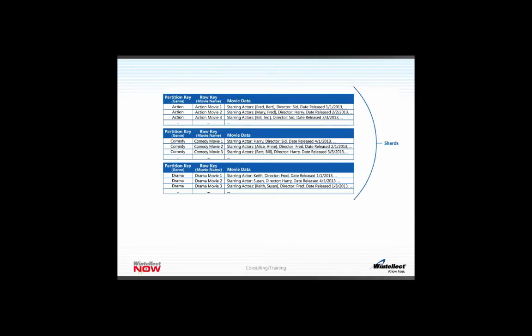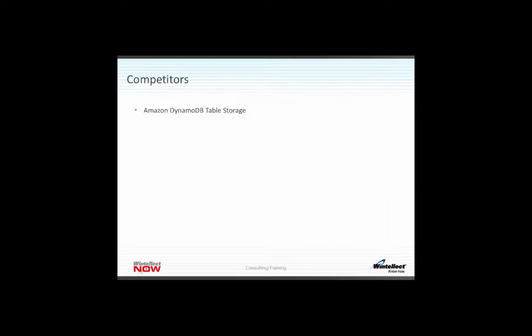You can shard Table Storage — storing all action movies in one place, all comedy movies in another, and drama in another. They'll be responded to by different compute instances, so comedy I/O contention won't interfere with the performance of action movies — they're separated. If you need an aggregate, you can fan out across all partitions and get your data back, keeping them all busy. You can decide how you're going to partition your data in Table Storage.